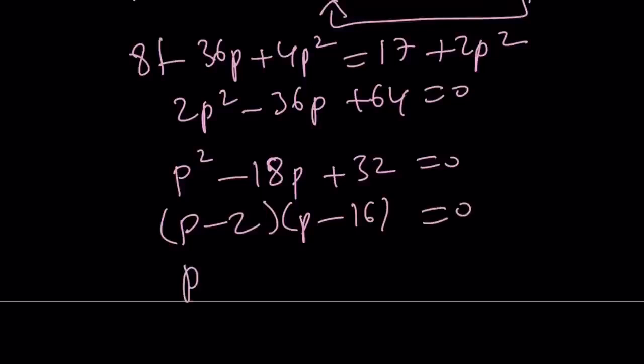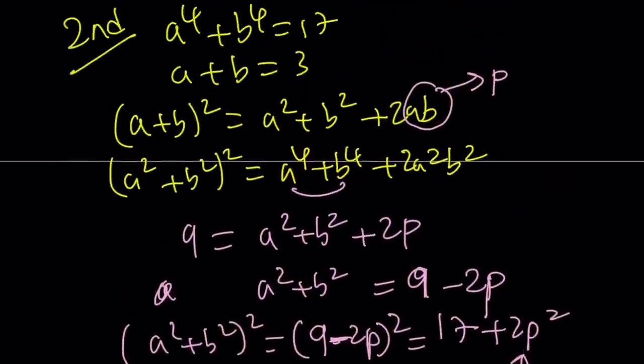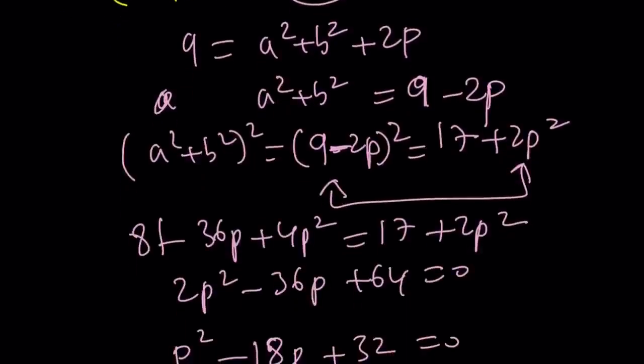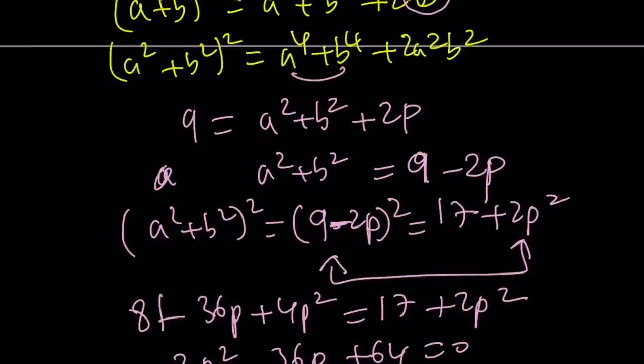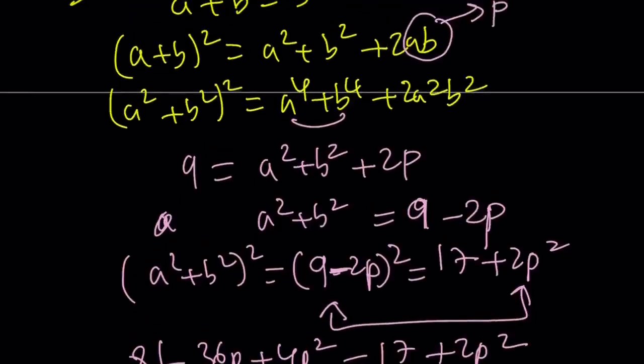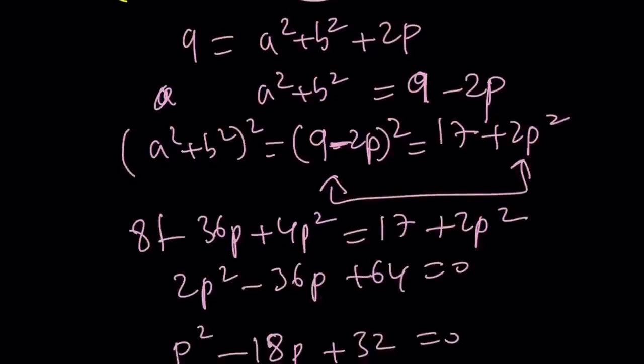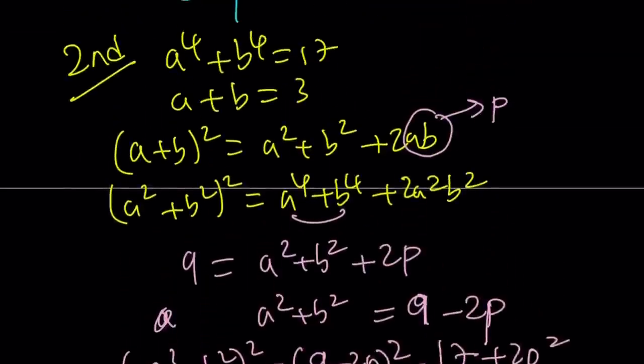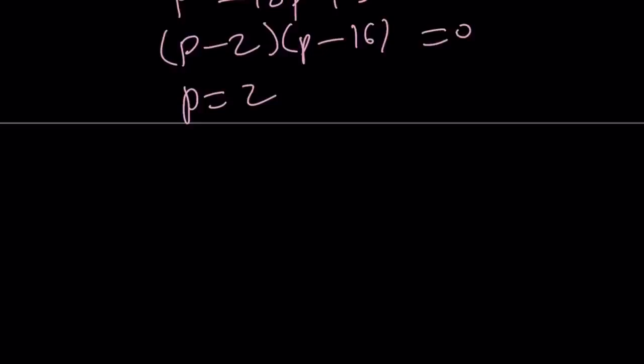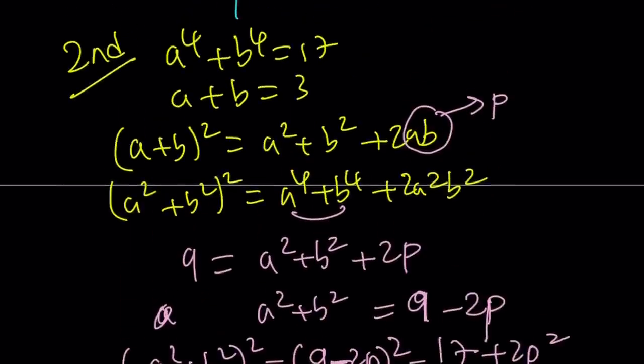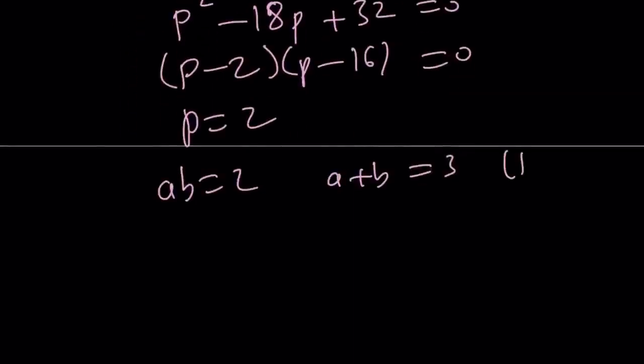From here, p equals 2. But, p is ab. If p is equal to 2, remember, we know that ab is equal to 2. I also know that a plus b is equal to 3. This gives us 2 comma 1 and 1 comma 2, right? 1 comma 2 and 2 comma 1. And, the other pair is going to give me, ab is equal to 16, which is p. And, a plus b is equal to 3. But, this is going to give us complex solutions.